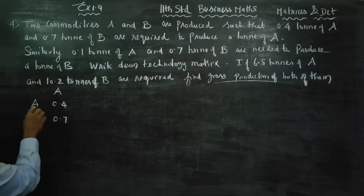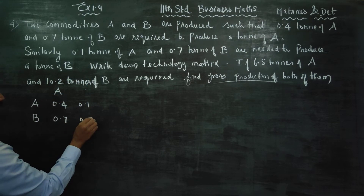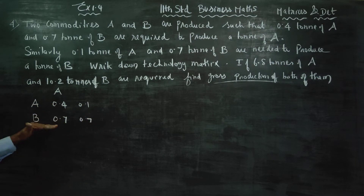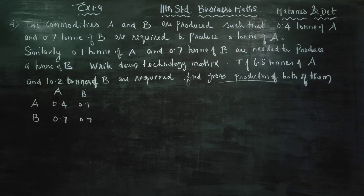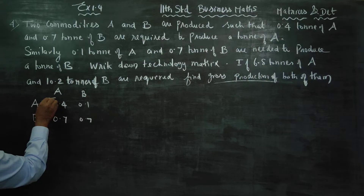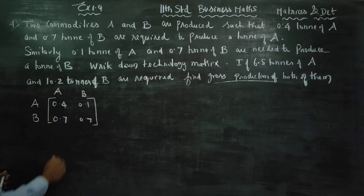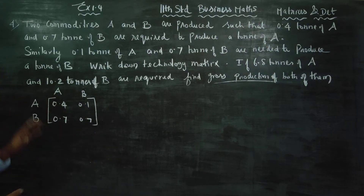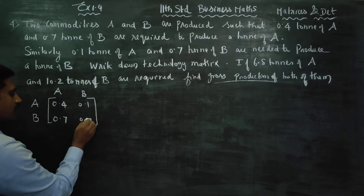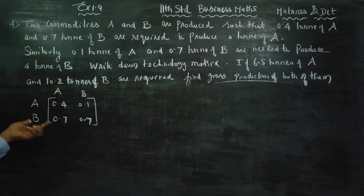1.1 tenths of A commodity and 0.7 tenths of B commodity are required. One-tenth of each commodity — when you calculate one-tenth, you get the technology matrix. This is the technology matrix.